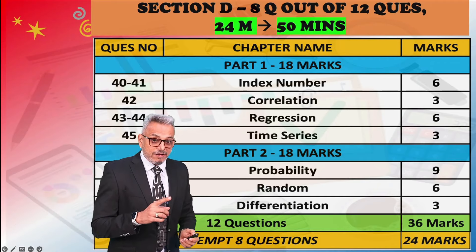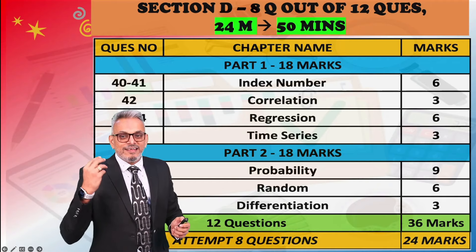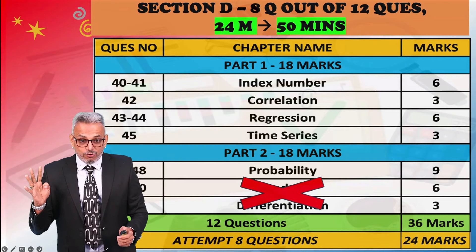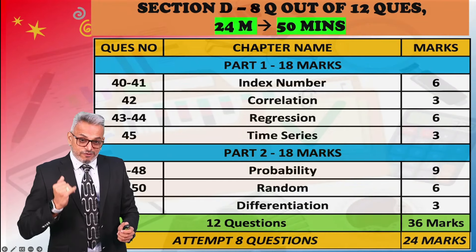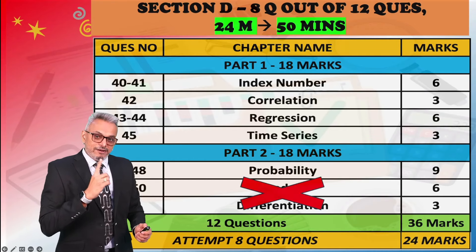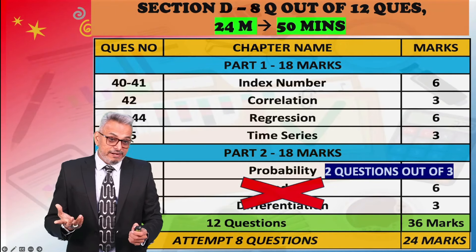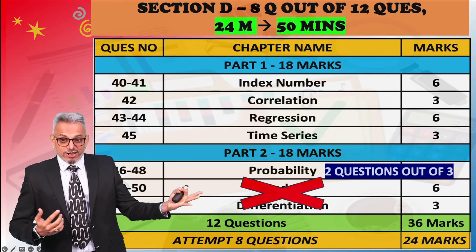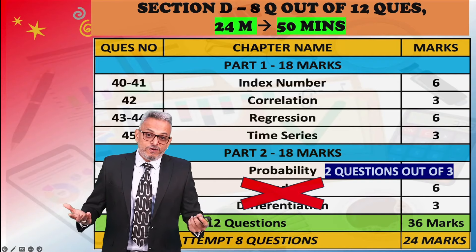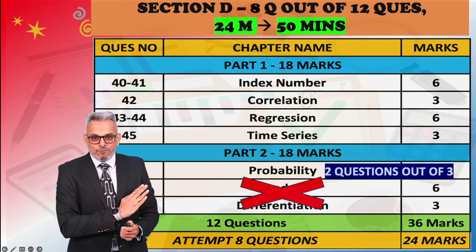Section D has Part 1 worth 18 marks and Part 2 worth 18 marks. Part 2 includes 3 probability questions, 2 random variable questions, and 1 differentiation question. Out of 12 questions you can remove 4. I recommend removing random variable and differentiation — that's 3 questions — and one more from probability, attempting 2 out of 3 probability questions. But if Part 1 has a question you're unsure of, plan accordingly.